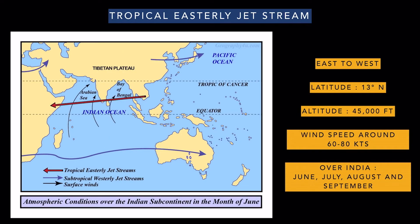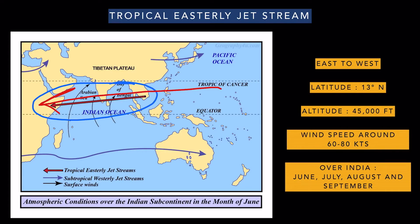The tropical easterly jet stream, as the name suggests, blows from east to west. It is located around 13 degrees north at 45,000 feet or 15 kilometers. The wind speed here is around 60 to 80 knots, which is much less compared to the subtropical jet stream. The wind speed is lesser because of its easterly direction — it is opposite to the direction of the earth's rotation from west to east — so that's why the wind speed is lower. This jet stream is observed over India in the monsoon months of June, July, August, and September.